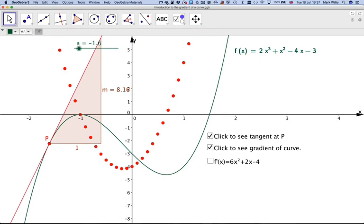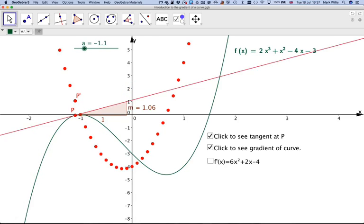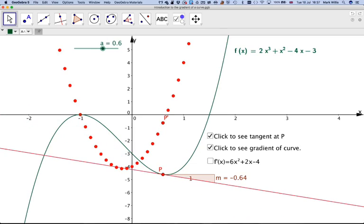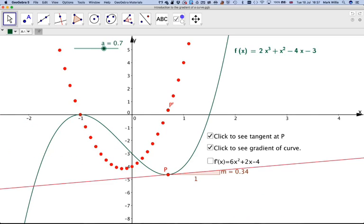And the fact that the gradient actually changes. This one is quite interesting because this is what we call a local maximum. You can see the gradient is actually equal to zero. And here also, you can see that the gradient, although I can't quite get it in the right place, at a particular point here, the gradient will also be zero. And that's called a local minimum.